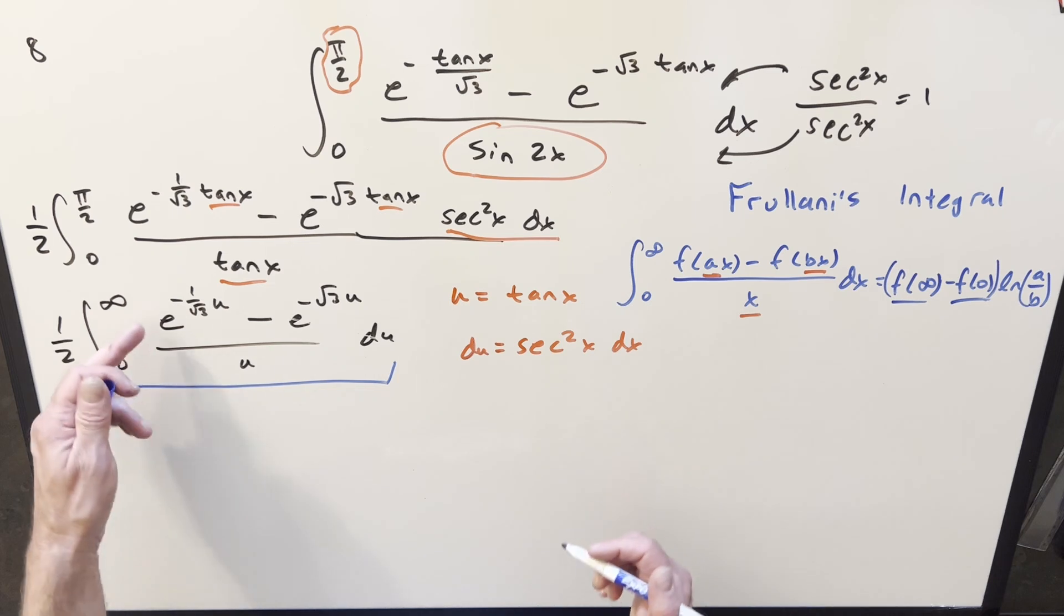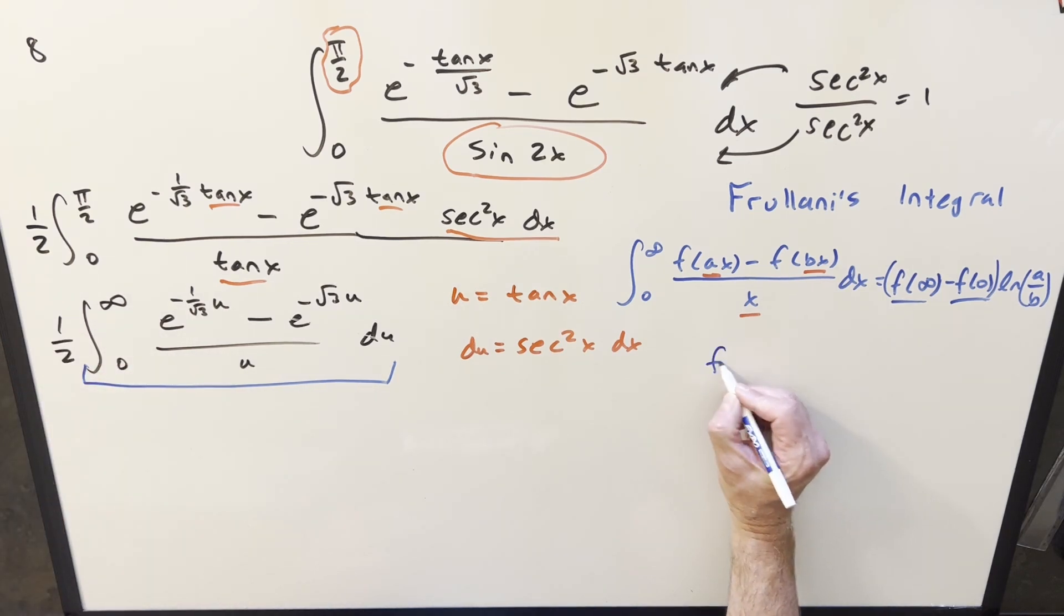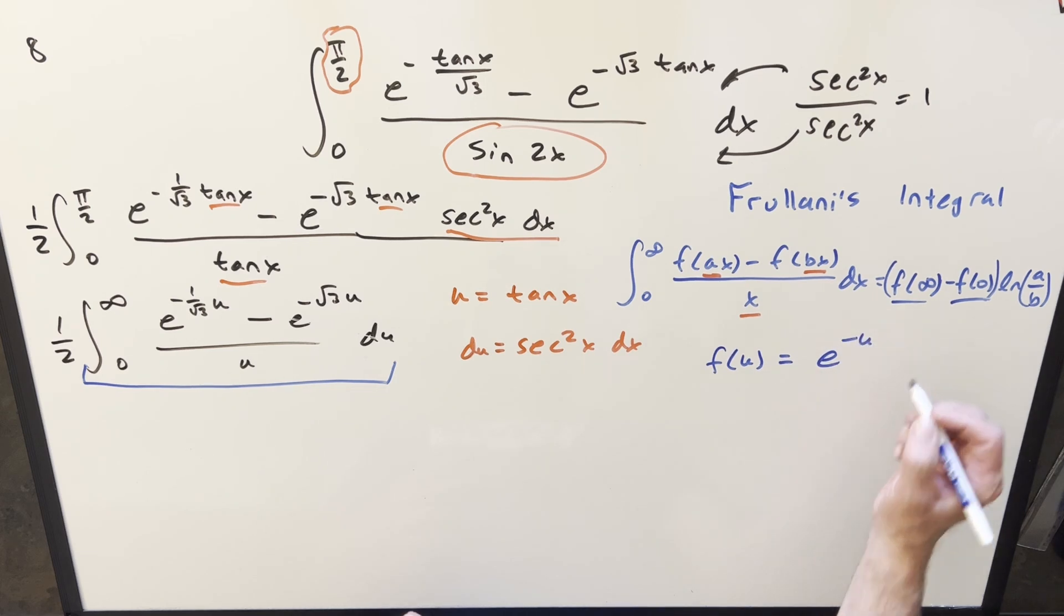But now first, we're going to need to get an f of x value, or in our case, f of u. So for our problem, f of u is just going to be e to the minus u.